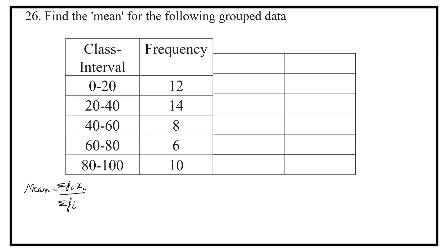So let us add two more columns. One for xi, that is midpoint of the class interval. So go on filling the midpoints. 0 plus 20 by 2 is 10, 20 plus 40 by 2 is 30, 40 plus 60 by 2 is 50, 60 plus 80 by 2 is 70, 80 plus 100 by 2 is 90.